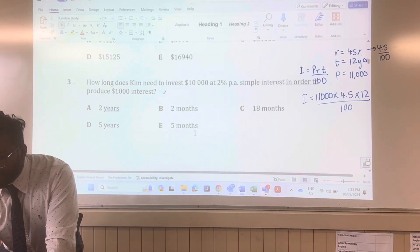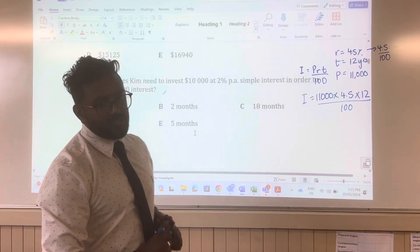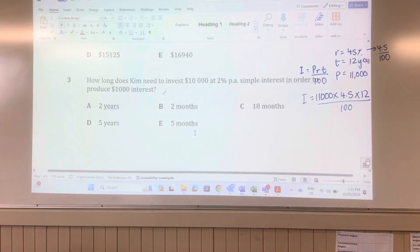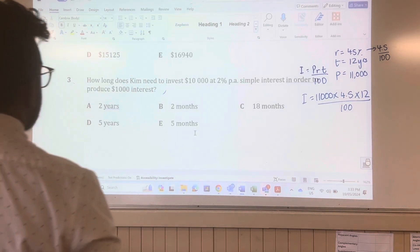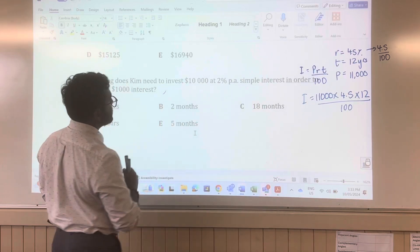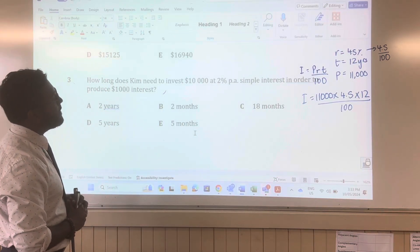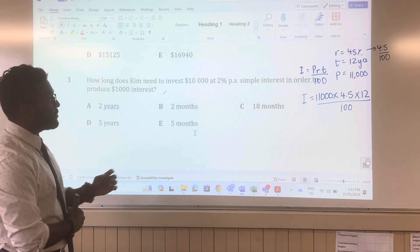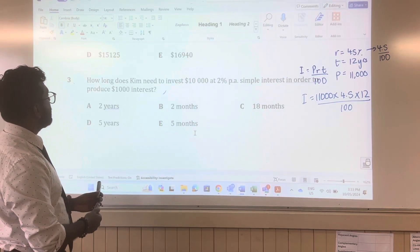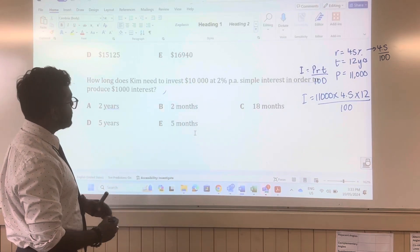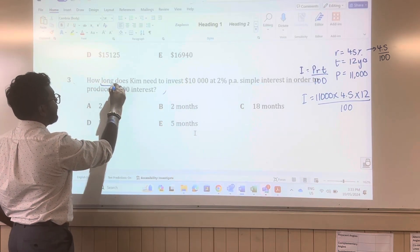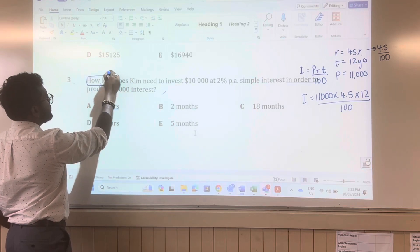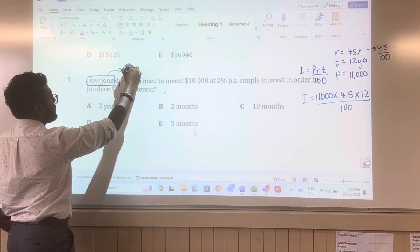Question number three. So question number three, it is a very similar question to question number two. In this case, it says here, how long does Kim need to invest $10,000 at 2.2% per annum, simple interest, in order to produce $1,000 interest? So this question is asking for what, how long? So what's that referring to? Time.